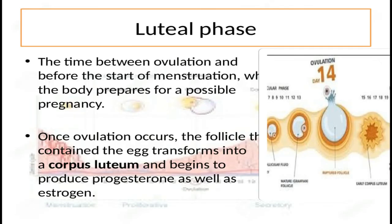The luteal phase is the time between ovulation and the start of menstruation, when the body prepares for a possible pregnancy. Once ovulation occurs, the follicle that contained the egg transforms into the corpus luteum and begins to produce progesterone as well as estrogen. Progesterone levels peak about halfway through this phase. The follicular cells remaining in the ovary become the corpus luteum, which produces these steroid hormones — progesterone and estrogen.